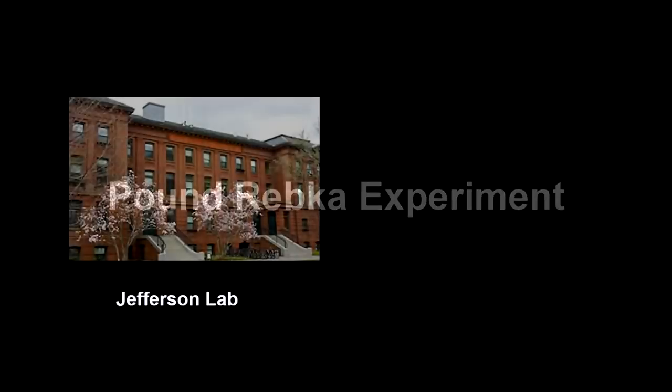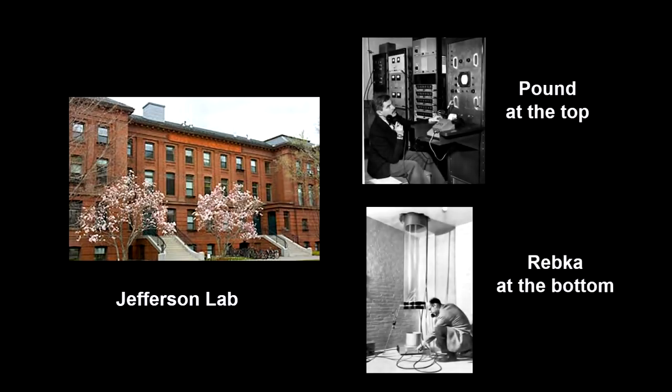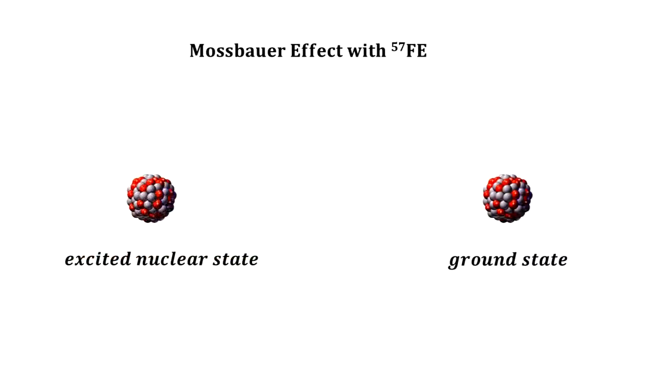In 1959, physicists Robert Pound and Glenn Rebka performed an experiment in the Jefferson Physical Lab at Harvard to demonstrate gravitational redshift. It was based on physicist Rudolf Mossbauer's effect, discovered two years earlier, that involves the emission and absorption of gamma rays from the excited states of iron nuclei.